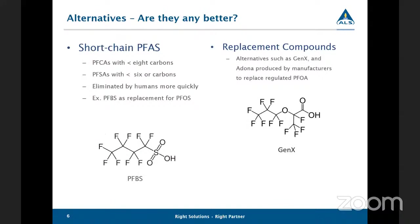Once these more common compounds — PFOS and PFOA — were being phased out and facing further restrictions, manufacturing started looking for alternatives. Manufacturing shifted to short-chain PFAS due to the fact they are believed to be eliminated more quickly and have lower potential for bioaccumulation. Short-chain refers to PFCAs less than 8 carbons and PFSAs less than 6 carbons. They also reformulated longer-chain compounds with replacement technologies such as GenX, which is the replacement for PFOA in manufacturing fluoropolymers such as Teflon. The question is, are these really any better? These alternatives may or may not be less hazardous than PFOS and PFOA, given that they have similar properties.